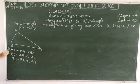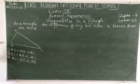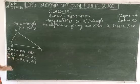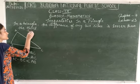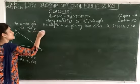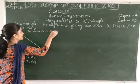I am going to prove the first one, and in a similar way you can do the others. We have to prove that AC minus AB is lesser than BC. Given: triangle ABC.